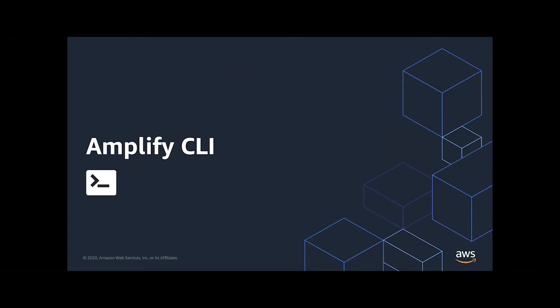The Amplify CLI is typically used for four things: initializing a new Amplify project, which is a boilerplate starter for adding AWS services; adding AWS services via the CLI once your project is initialized; configuring and updating existing services — so you can modify code locally and deploy that update; and as of this week, importing existing AWS services. It also does code generation, such as GraphQL schema introspection for generating local code based on your GraphQL schema.